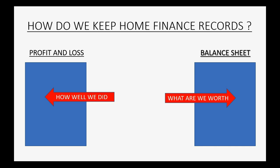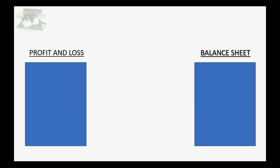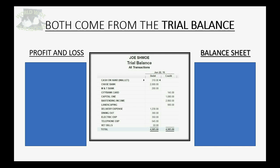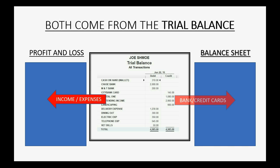The Balance Sheet is going to tell us what we and the things that we own are worth. These two reports both come from a third report called the Trial Balance. The Trial Balance is the main report that shows the accumulated totals of all the transactions after they've been broken up into their categories and summarized. The income and expense accounts will be listed on the Profit and Loss, and all the rest of the numbers in the Trial Balance will be listed on the Balance Sheet. It's a simple process that works out fine.